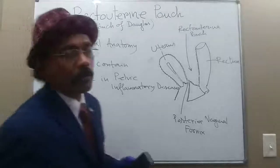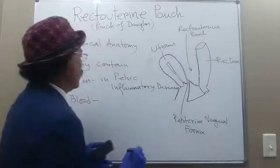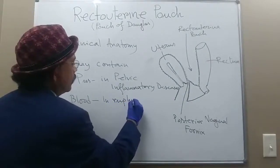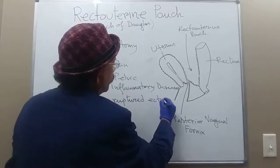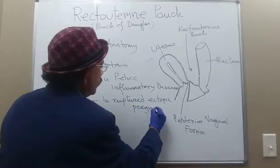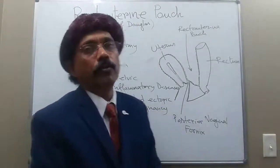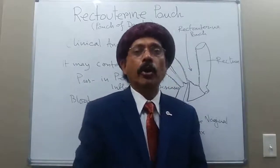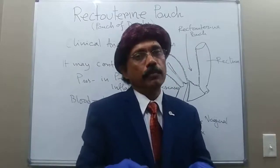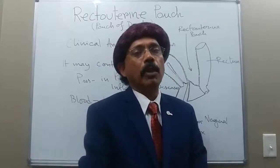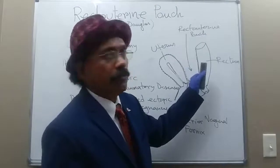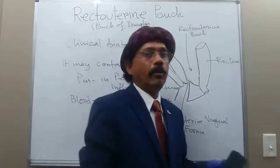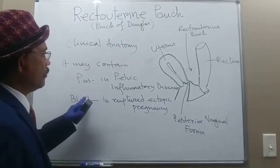It may contain blood in any type of trauma or domestic violence. It may contain blood in ruptured ectopic pregnancy — we know that the fallopian tube, especially the ampulla, is a very common site of ectopic pregnancy. After a few months of pregnancy, trophoblastic cells erode the wall of the fallopian tube and it may rupture, causing bleeding inside the peritoneal cavity. That blood may be deposited in the recto-uterine pouch because this is the most dependent part.